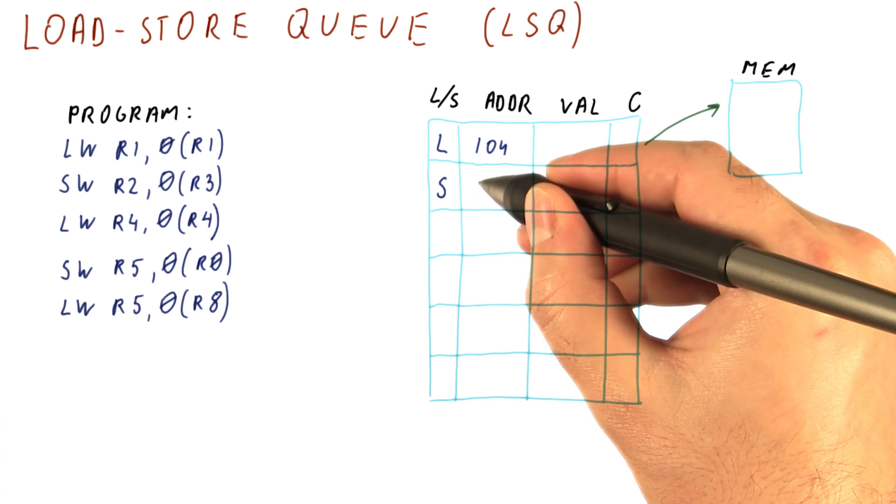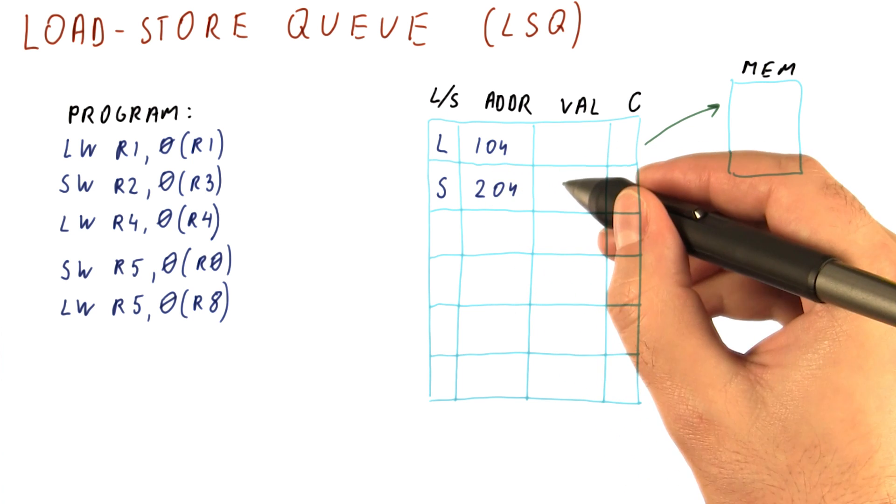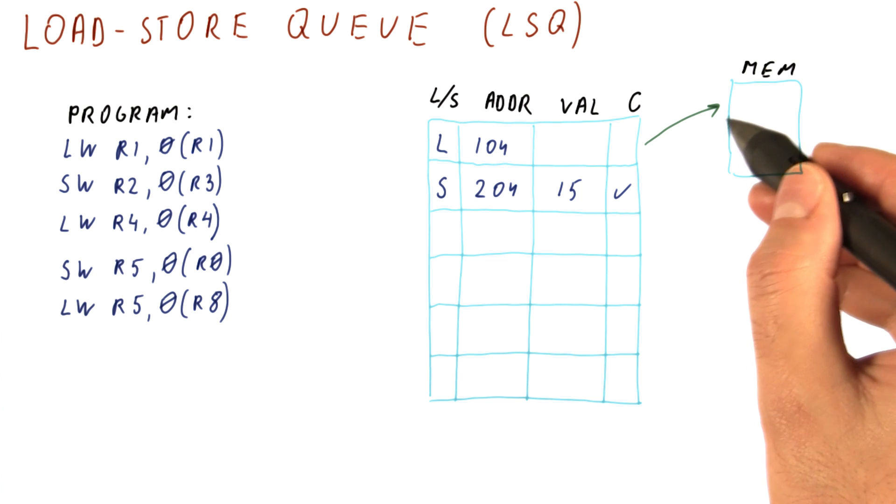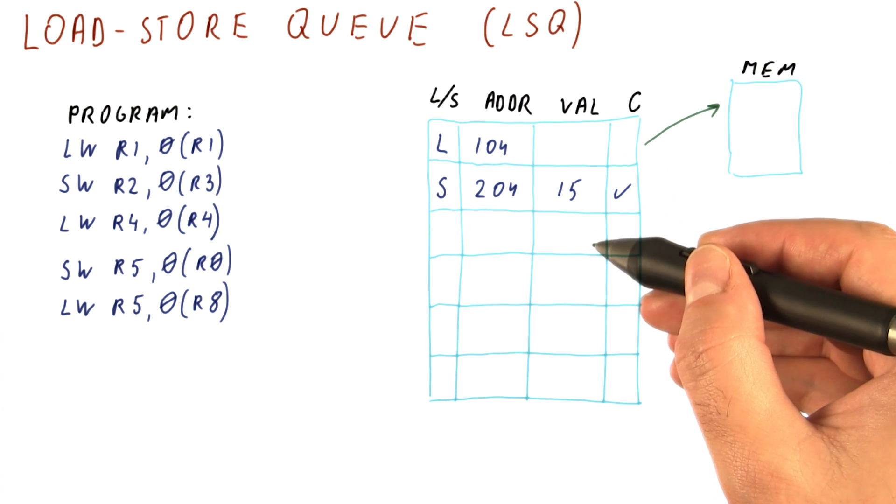The next instruction here is a store. Let's say that it computes the address of 204. Let's say that the value is 15 and we mark it done. And let's say that this instruction is kind of delayed so it doesn't return yet. So we still have all of these in the load store queue.